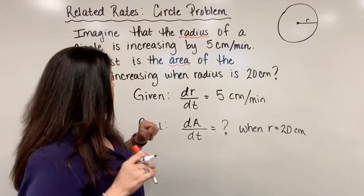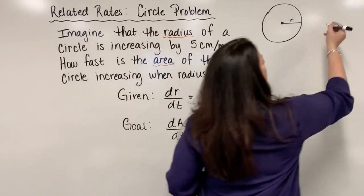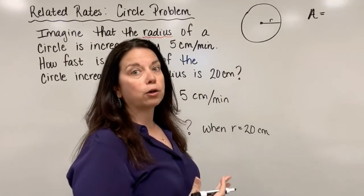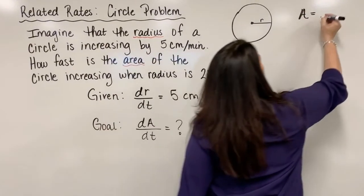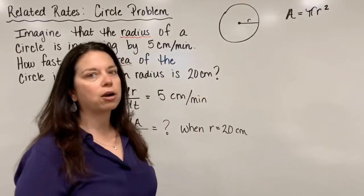What do we know about area of circles? We have a formula that helps us connect together area and radius. We know area of all circles goes back to the formula pi r squared. So A equals pi r squared.